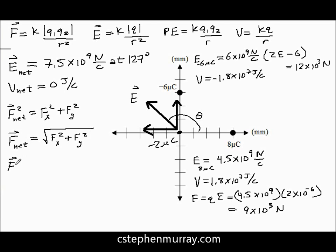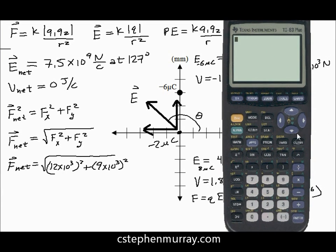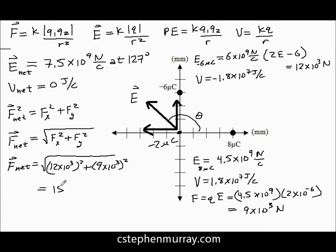Because it's a vector, we have to use Pythagorean theorem. Our net force is going to equal F1 squared plus F2 squared. You should get to the point where you can do it this way: the net force equals Pythagorean theorem, first one squared plus your second one squared. This is only if they're X and Y perpendicular vectors. Our net electric field equals the square root of 12 times 10 to the third squared plus 9 times 10 to the third squared. We get 15 times 10 to the third.